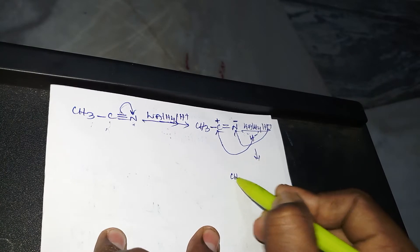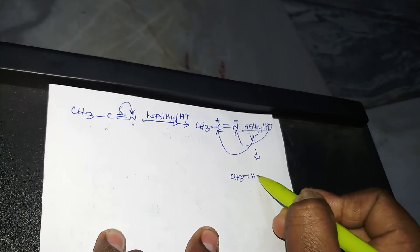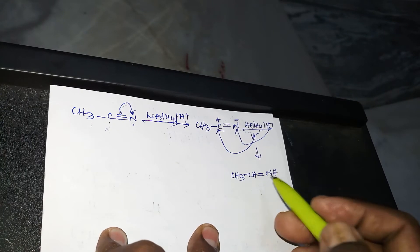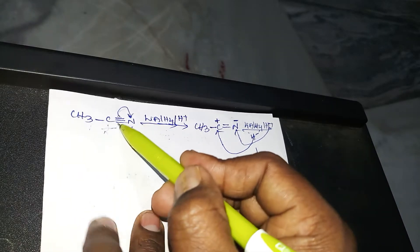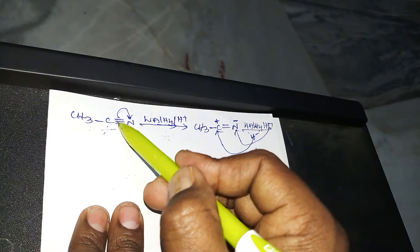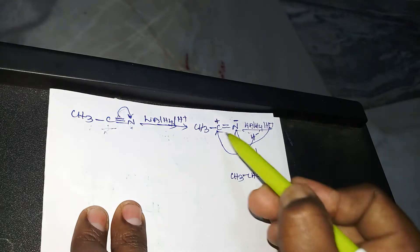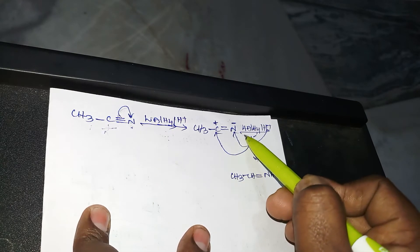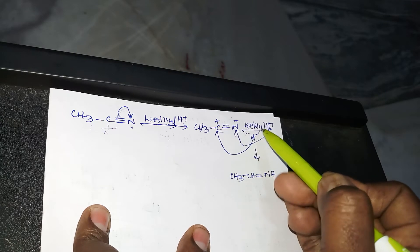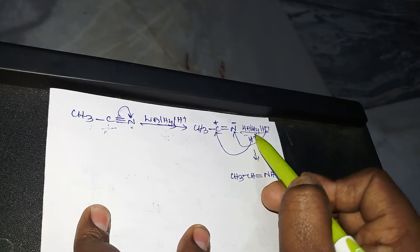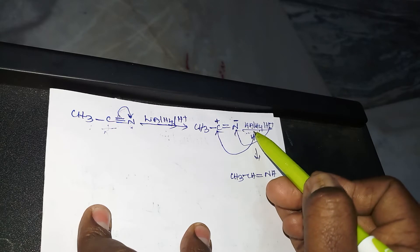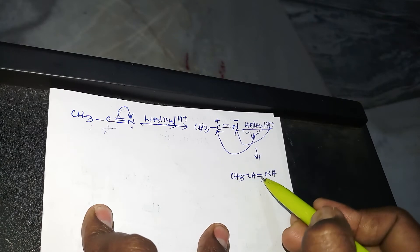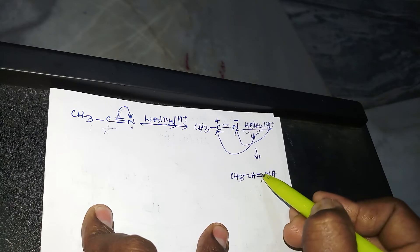The product will be CH3 CH double bond NH. This is the main intermediate product. Now in CH3CN, one bond shifts towards the right-hand side, so carbon gets a positive charge. In the presence of lithium aluminum hydride — which has four negative hydrogens — one hydrogen goes to the positive side and H+ goes to the negative side.